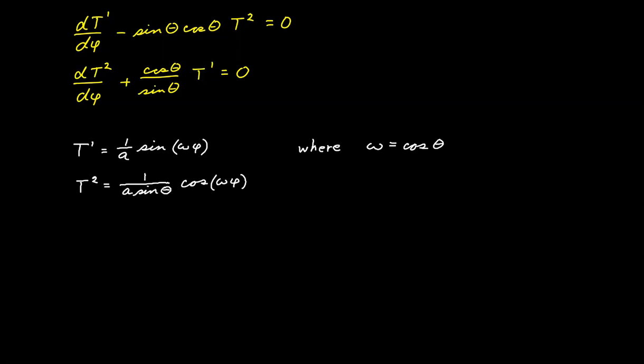Here are the solutions. We find that, remember, theta is a constant, so cosine theta is a constant. So we set cosine theta equal to omega, and that becomes what we call the angular velocity in this argument right here.